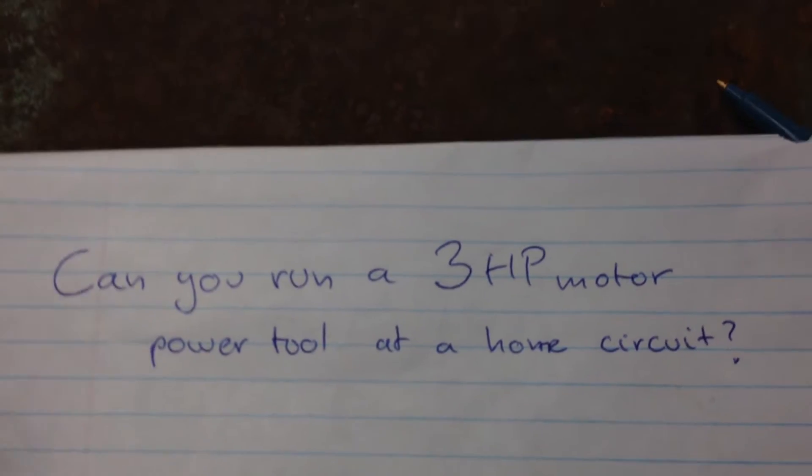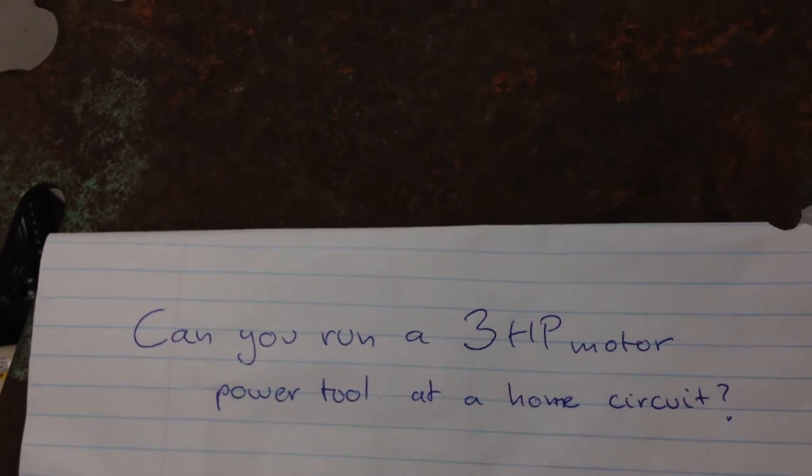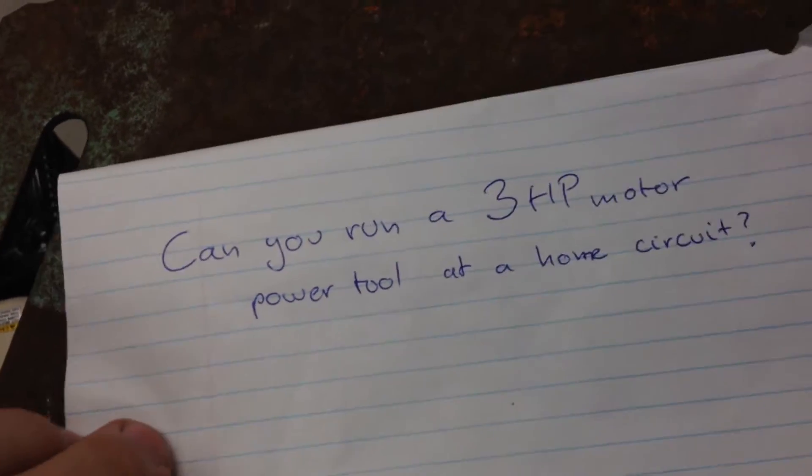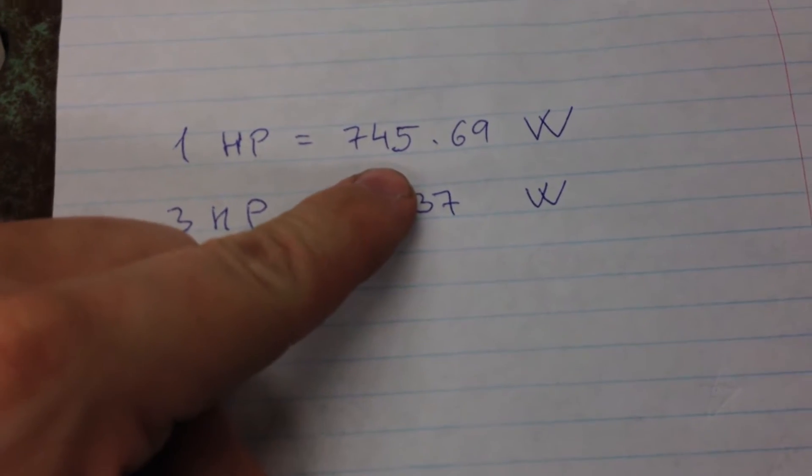I'll show you why it's mathematically not possible. One horsepower is difficult to calculate with, it has to be converted to watts. I have pre-printed everything. One horsepower is 745 watts, so three horsepower will be three times that amount, which is 2237 watts.